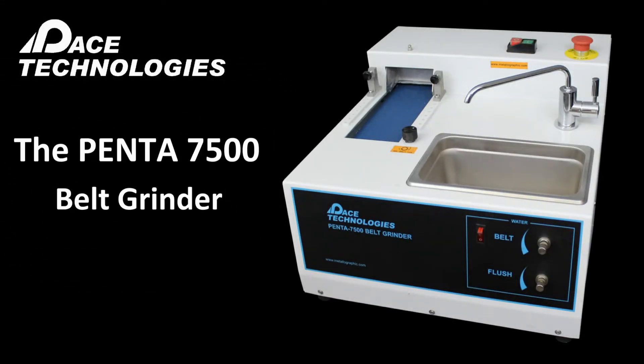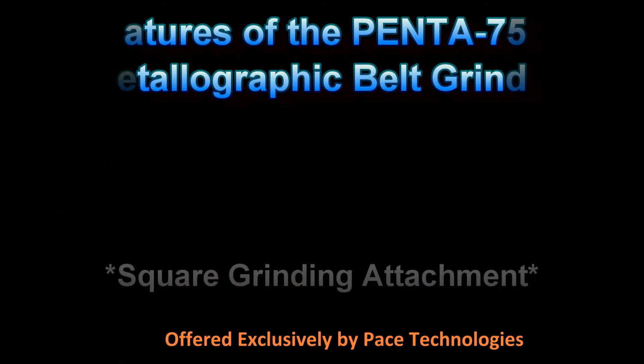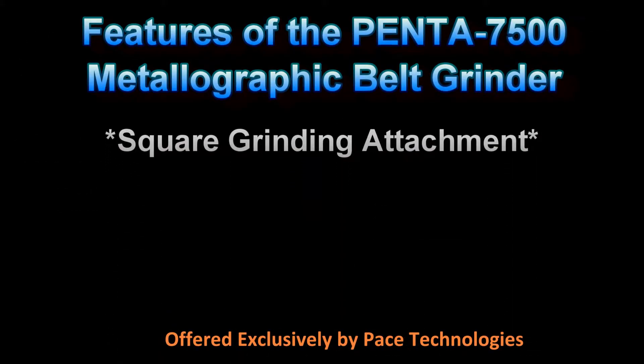The Penta 7500 is a metallographic belt grinder. It is the only metallographic belt grinder that has a square grinding attachment. This allows for fast, coarse grinding and keeps the specimen square and planar.